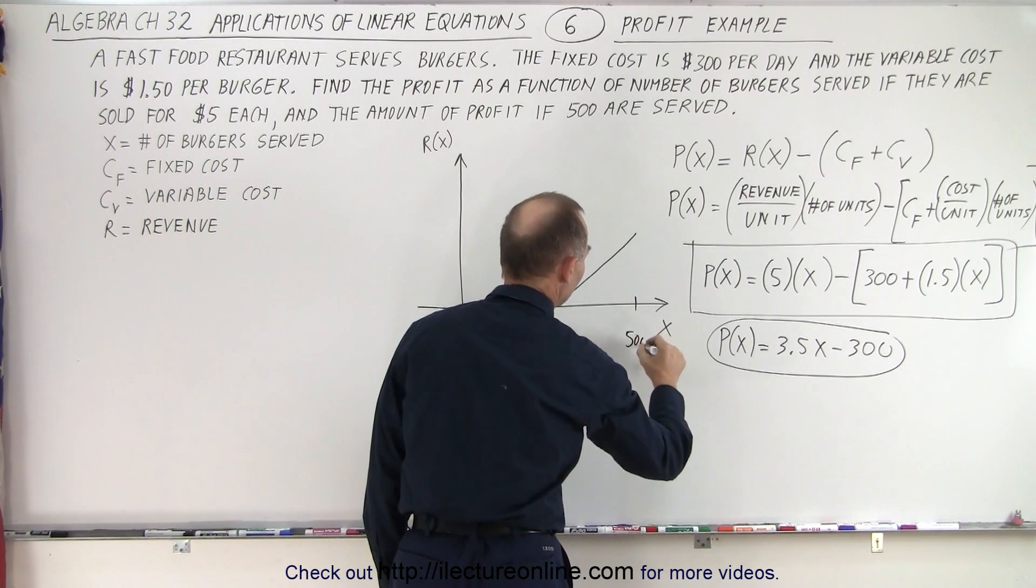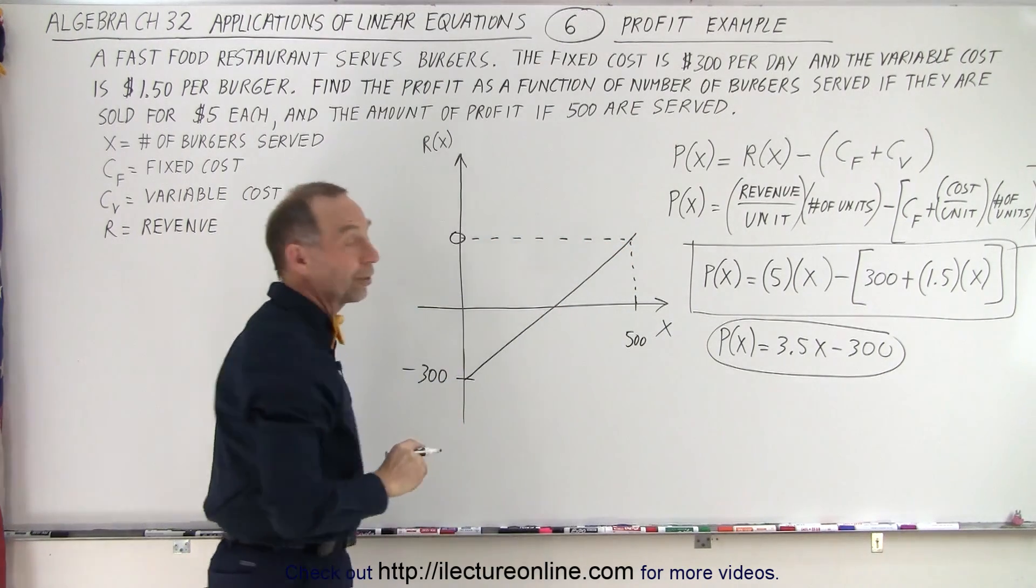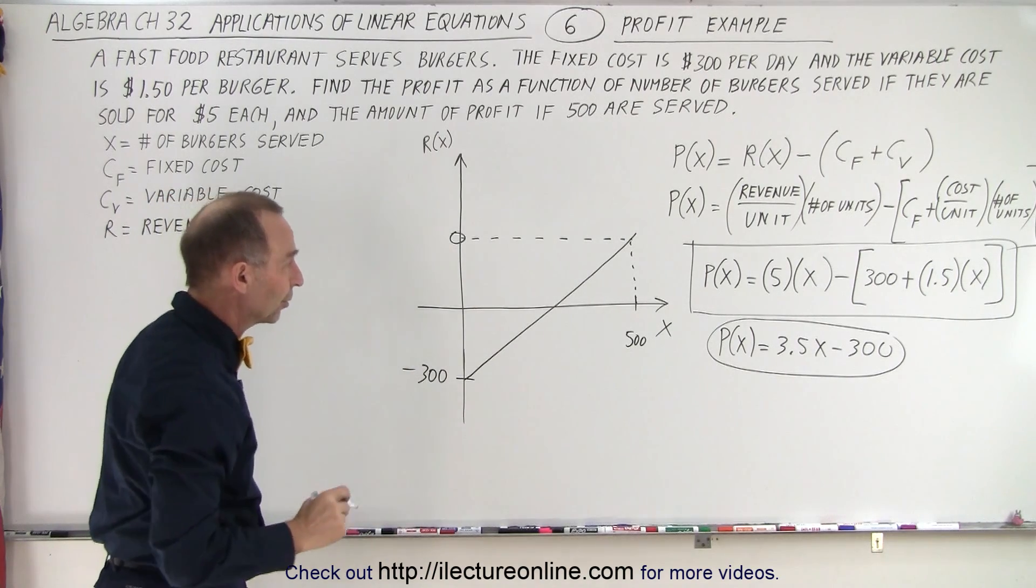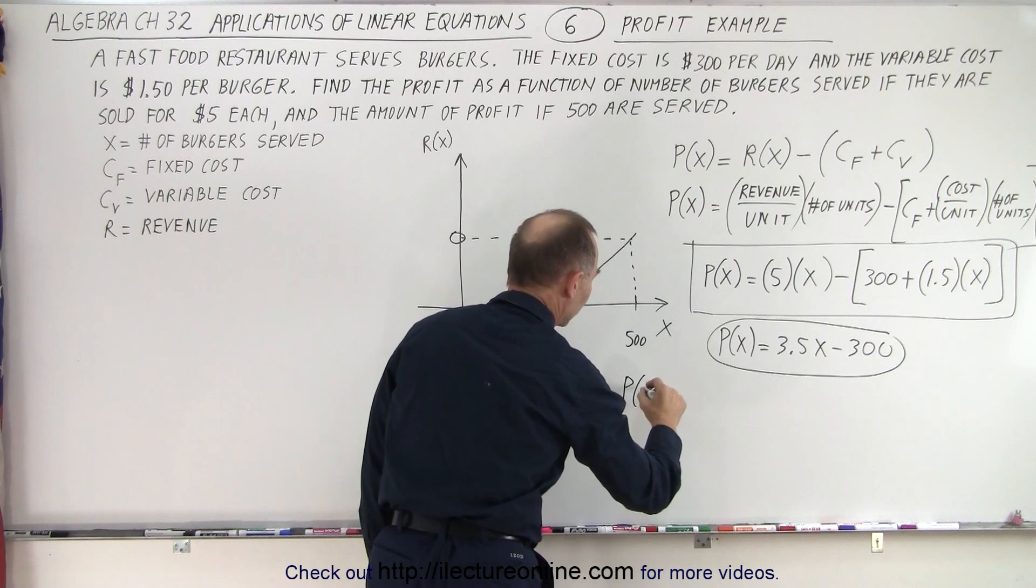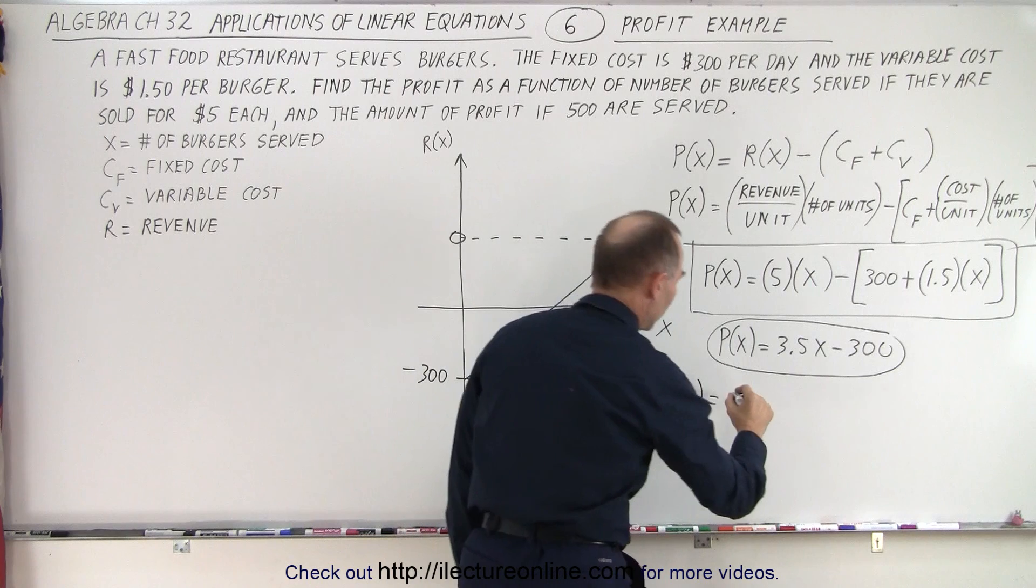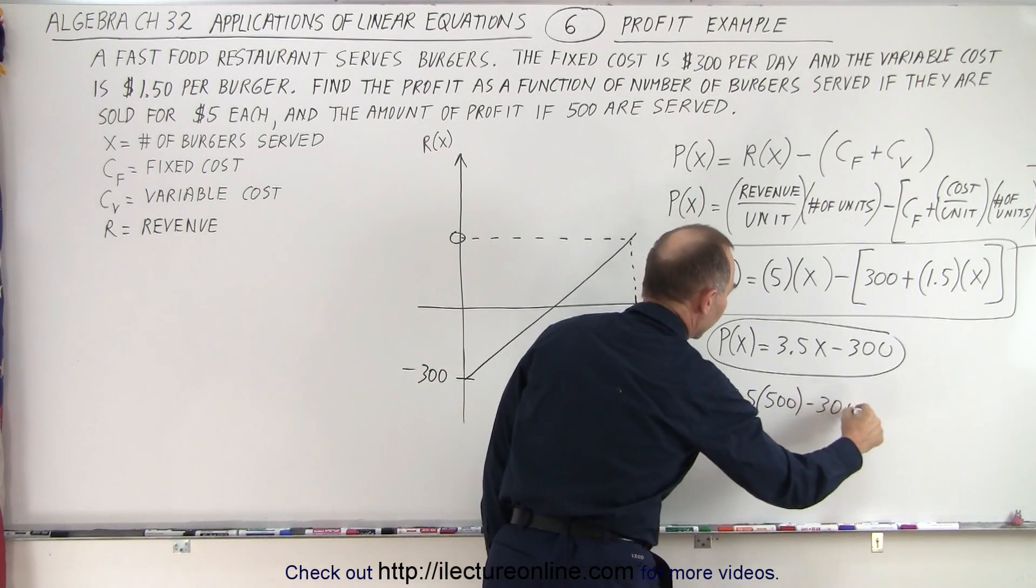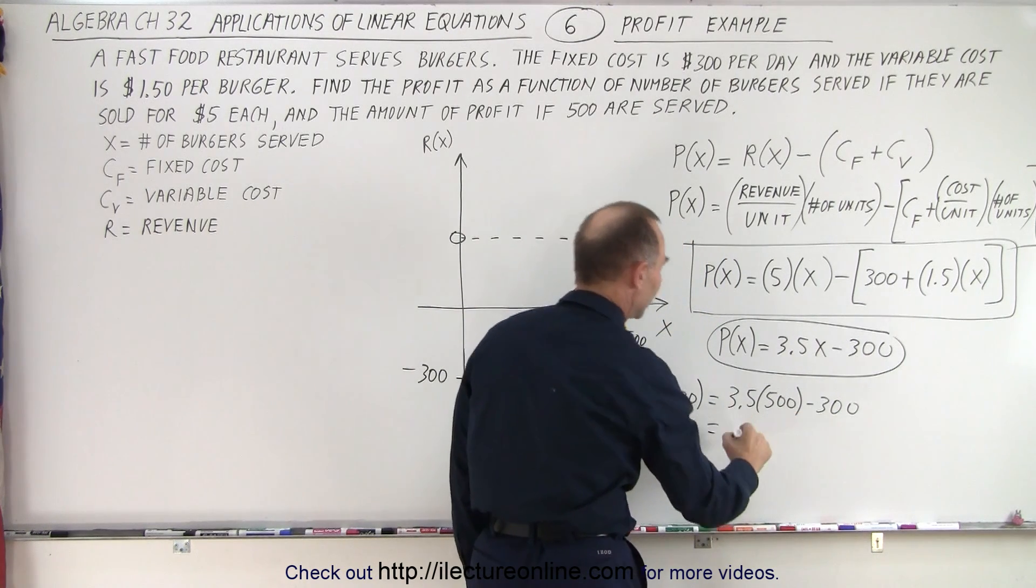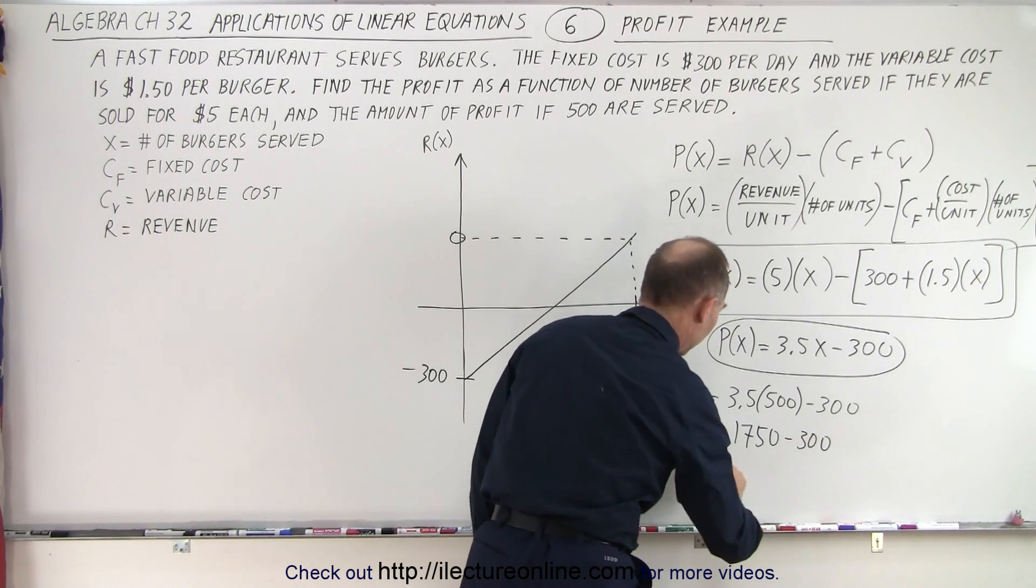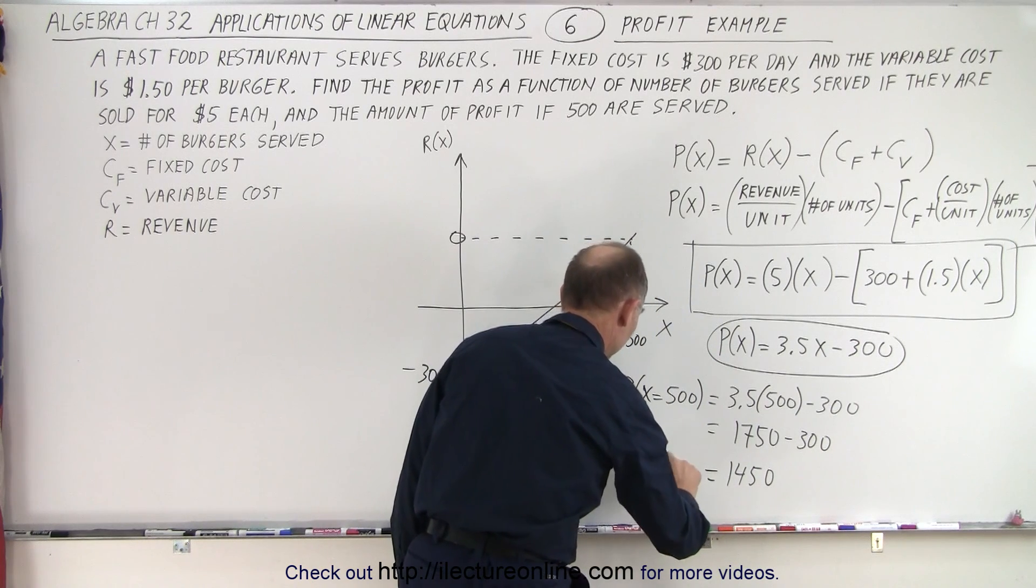So the next thing we need to do is find out how much profit we're going to make if we serve 500 burgers. So I'm going to say that the profit as a function of x being equal to 500 is equal to 3.5 times 500 minus 300. So 3.5 times 500, that's 1,750. 1,750 minus 300, and so that would be equal to 1,450.